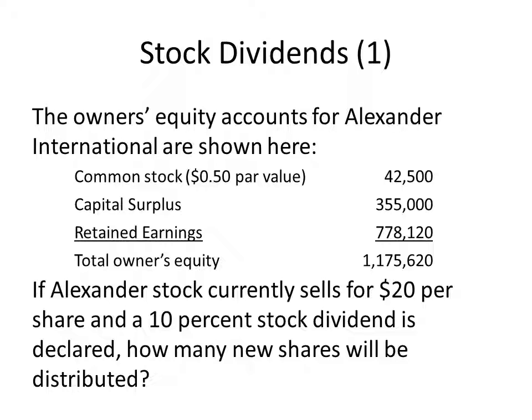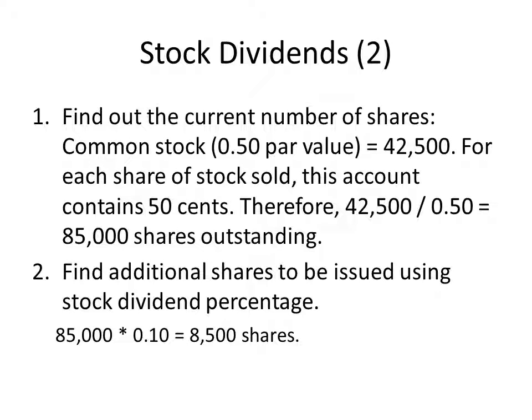If Alexander Stock currently sells for $20 per share and a 10% stock dividend is declared, how many new shares will be distributed? First, find the current number of shares. The common stock at par account has $42,500, representing 50 cents for every share ever issued. So $42,500 divided by $0.50 par value gives us 85,000 shares outstanding. A 10% stock dividend means we will be issuing 8,500 new shares.